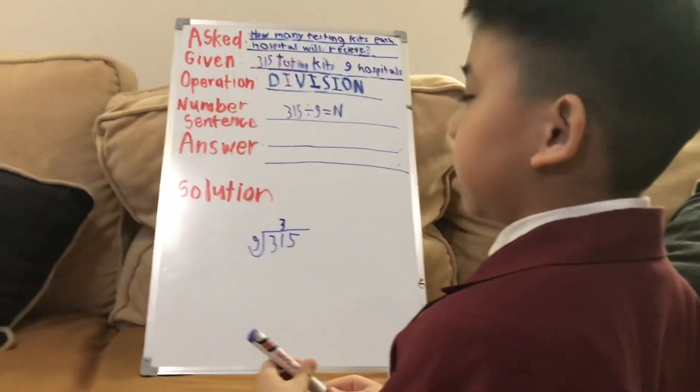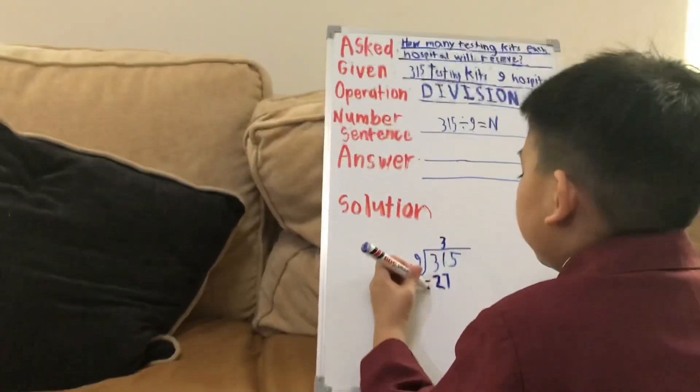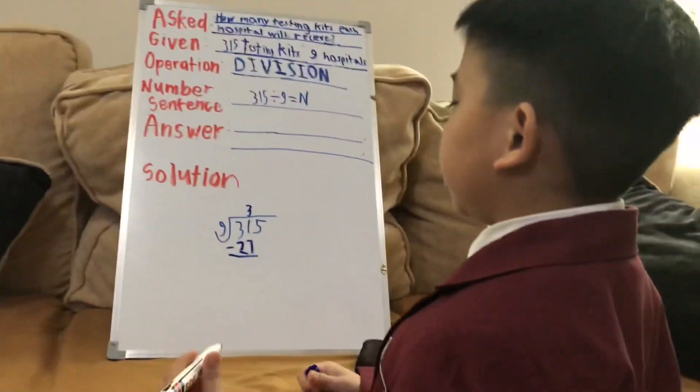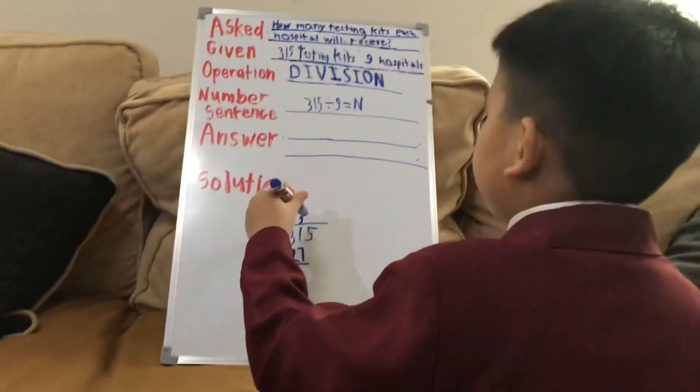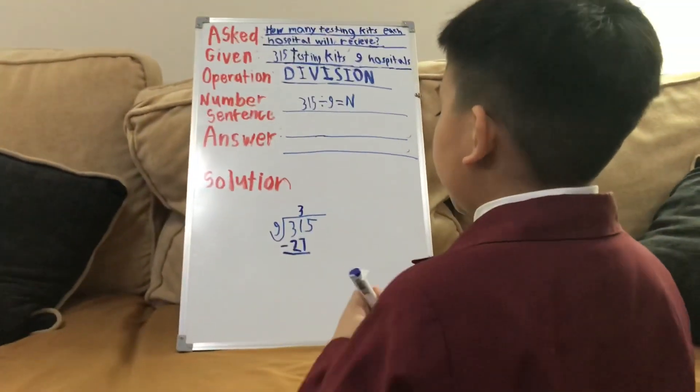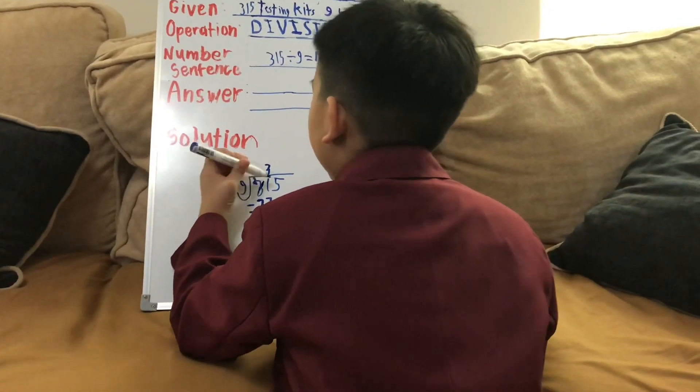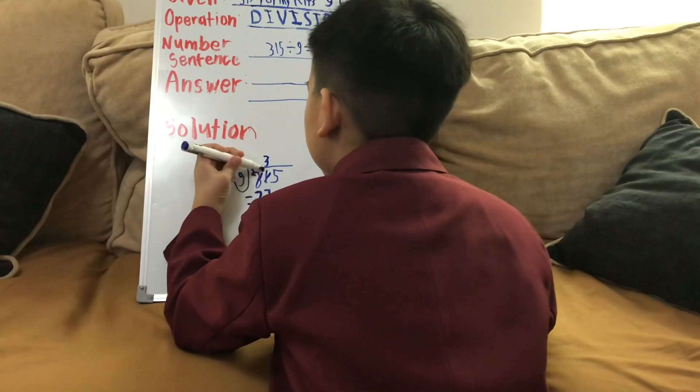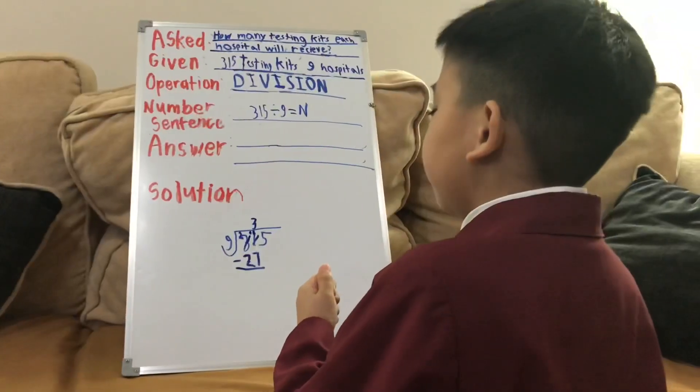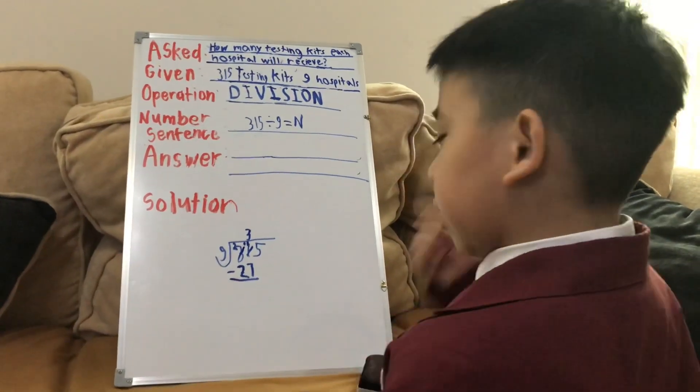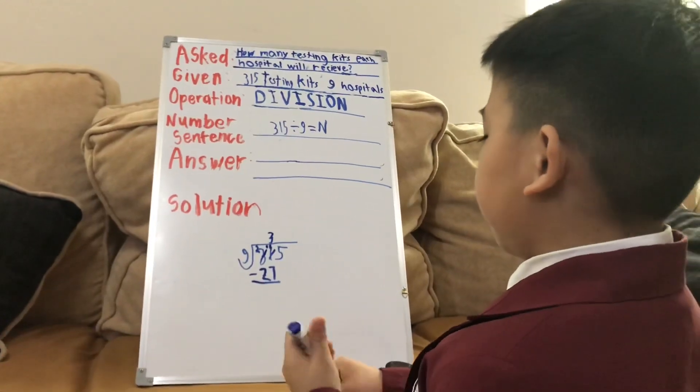And then now, we stop from 27. 27 over here. And what should we do with the 27 is to minus. We cannot minus 1 and 7. So, we have to remove 3 to 2. And now, let's exchange the 1 to 11. And now, we have 11. 11 minus 7. We have to count. 7, 8, 9, 10, 11. There is 4.